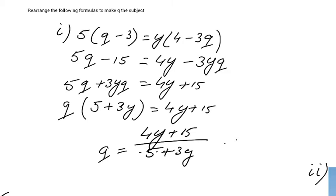And that is your final answer. So again, you got those 2 terms with a Q. You cannot add them because they are not like terms. So you will have to factorize it and then divide by 5 plus 3Y in this case.